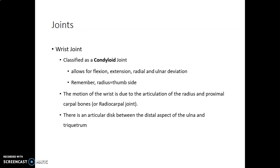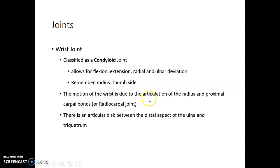The wrist joint is a condyloid type of synovial joint. It allows four major movements: flexion and extension, and radial and ulnar deviation. Radial deviation is towards the side of the thumb, ulnar deviation is towards the small finger. The motion of the wrist is due to articulation of the radius with the proximal carpal bones — it's really the radiocarpal joint where the movement occurs.